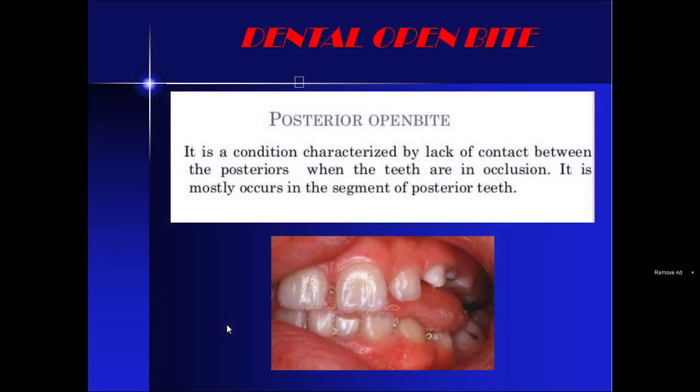Posterior open bite, as the name suggests, is present in the posterior segment of the oral cavity. It may be due to macroglossia — that is, a large tongue — or habits like tongue thrust or lateral tongue thrust.